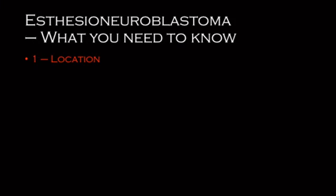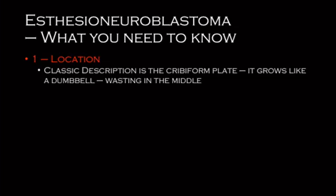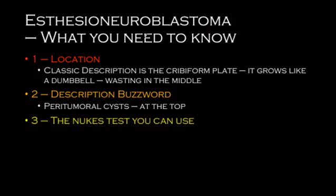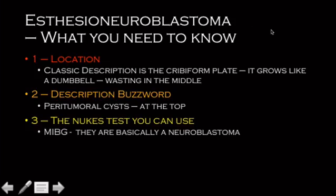Basically it's a tumor that arises from the little nerve cells at the cribriform plate. Because of that location, they grow up and they grow down, and they waist in the middle at the cribriform plate — so it looks like a dumbbell or snowman. The buzzword is peritumoral cysts at the top. And because it has the word neuroblastoma in it, remember it can be imaged with an MIBG scan.